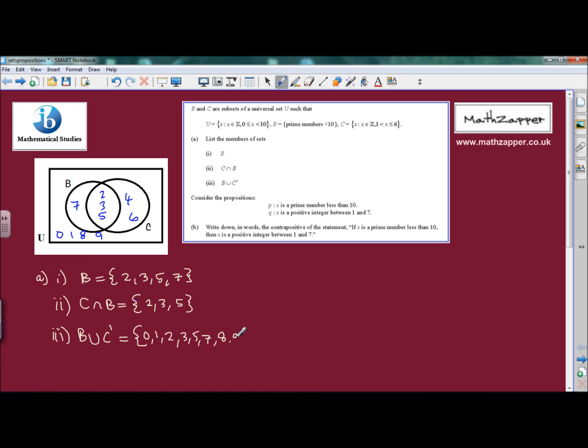It's just worth looking at this set again just to be clear. B union C dash means everything that's in B and also everything that's not in C. So everything that's in B is there: 2, 3, 5 and 7. And everything that's not in C is 0, 1, 8 and 9. So it's a combination of these four numbers and these four numbers. And there we are, we've answered part A.